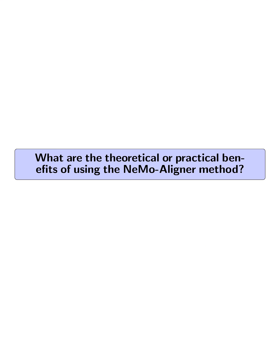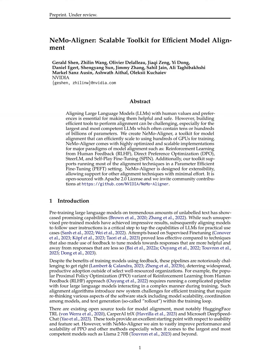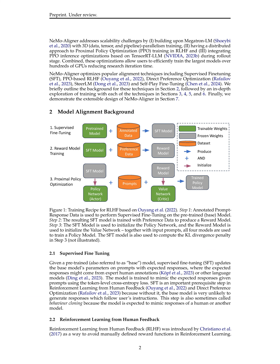What are the theoretical or practical benefits of using the NEMO Aligner method? The benefits lie in its ability to address scalability challenges in training large language models efficiently. NEMO Aligner optimizes popular alignment techniques such as supervised fine-tuning, RLHF with PPO, direct preference optimization, and self-play fine-tuning. By building upon Megatron-LM with 3D parallelism training and integrating PPO inference optimizations based on TensorRT-LLM during the rollout stage, NEMO Aligner allows users to train the largest models over hundreds of GPUs, reducing research iteration time significantly.